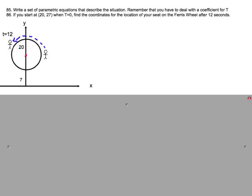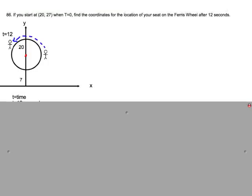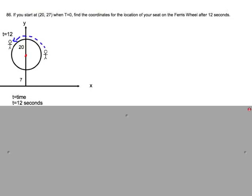Problem 86 says, if you start at (20, 27) when T equals 0, find the coordinates for the location of the seat on the Ferris wheel after 12 seconds. The blue arrow represents the man in the Ferris wheel who is moving in a counterclockwise direction.